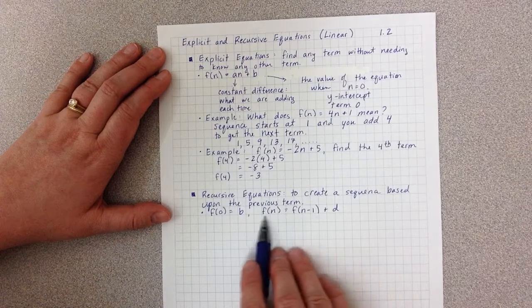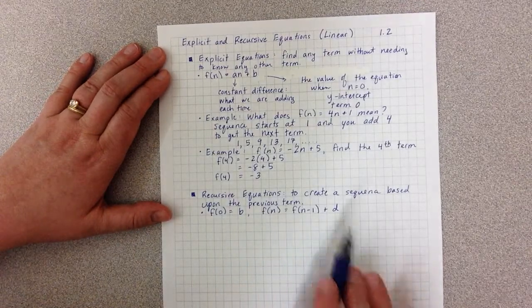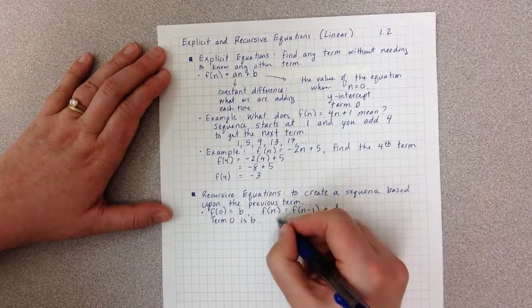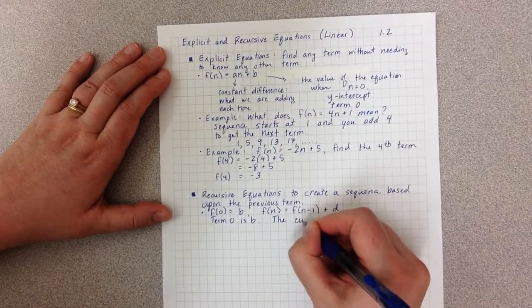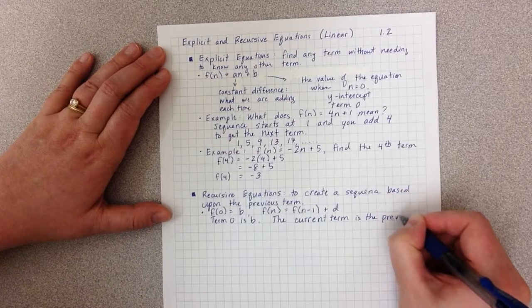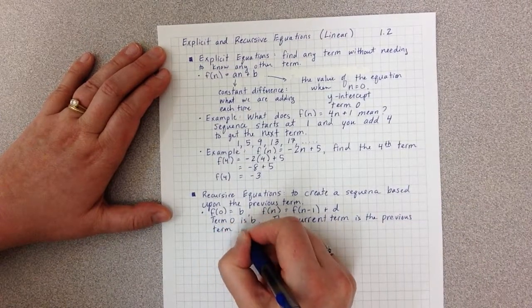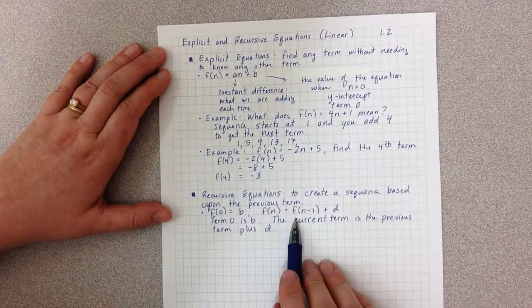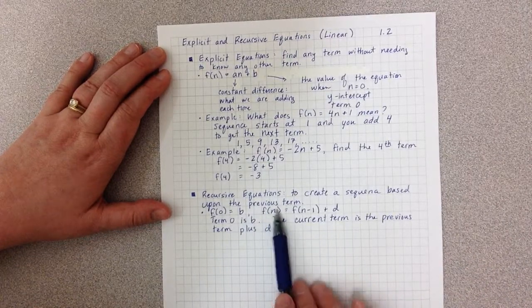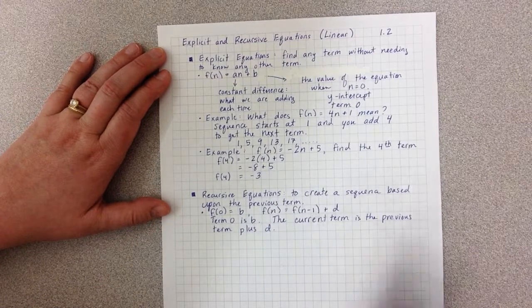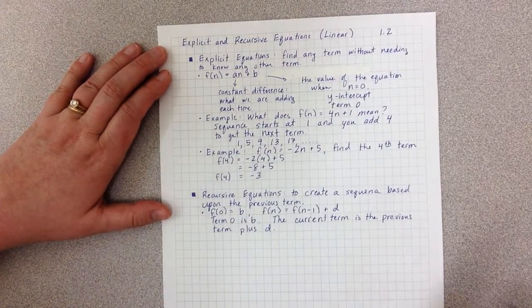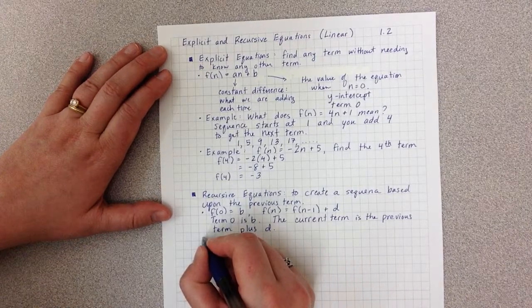Now, the important part about this notation is that I could actually write all of this notation in words saying, term 0 is b. The current term is the previous term plus d. So this notation looks fancy and maybe a little intimidating, but it actually just says the current one I'm looking at is based upon the previous one. So I look one step behind to get where I'm at currently. And once I see my step behind, I add d to that.